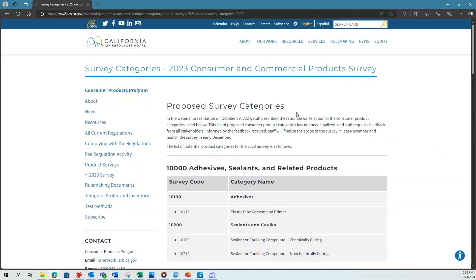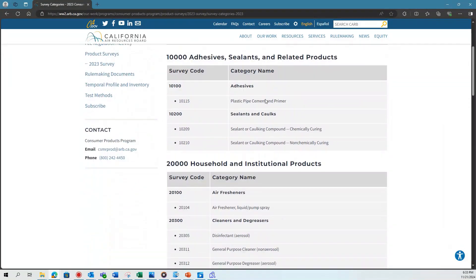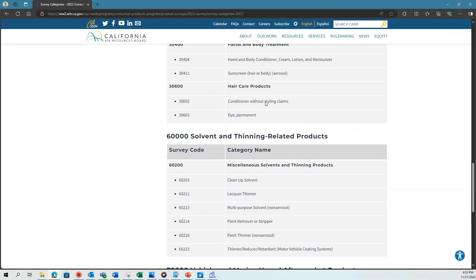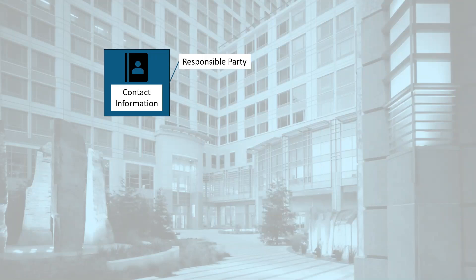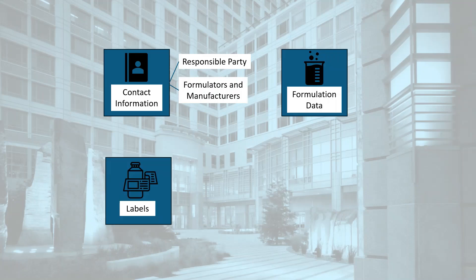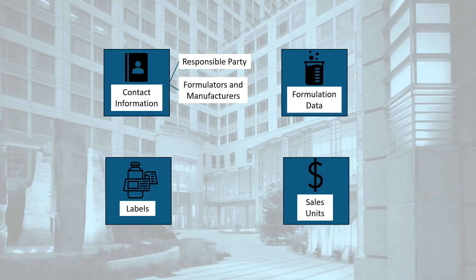A list of the product categories being surveyed is available on CARB's Consumer Products webpage. We will be collecting information similar to what has been required in past surveys: contact information for responsible parties and their formulators and/or manufacturers, formulation data for products, descriptive information of the products, and product sales data from the 2023 calendar year.